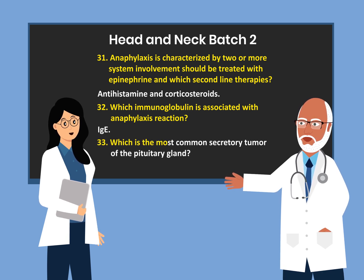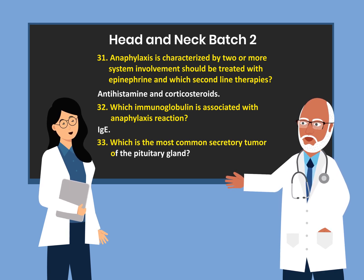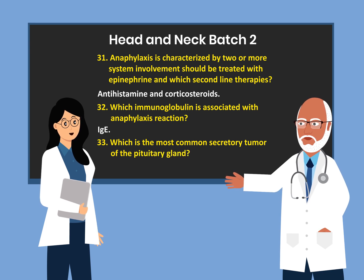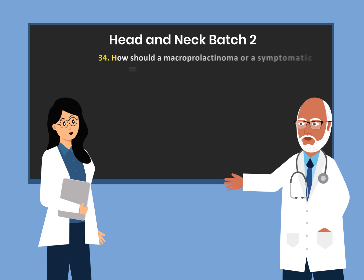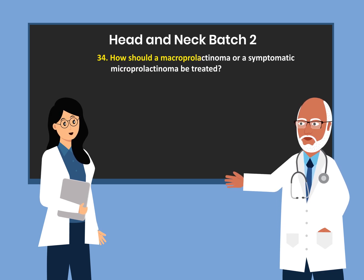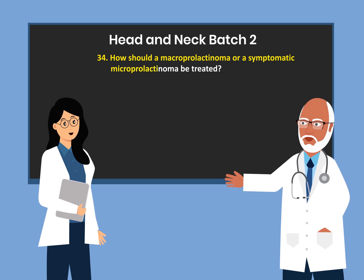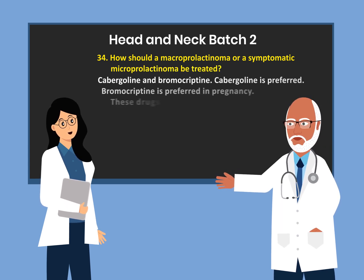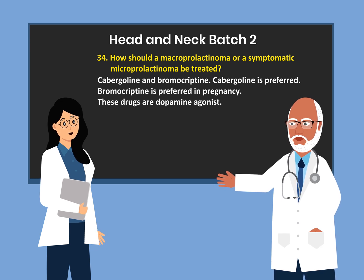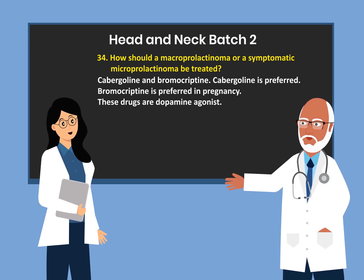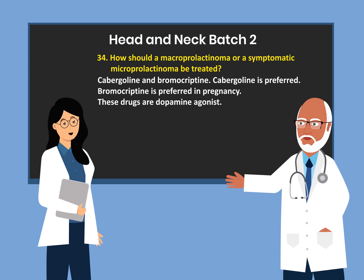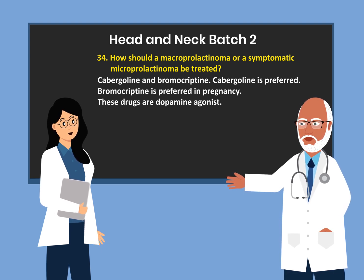Which is the most common secretory tumor of the pituitary gland? Prolactinoma. How should a macroprolactinoma or a symptomatic microprolactinoma be treated? Cabergoline and bromocriptine. Cabergoline is preferred; bromocriptine is preferred in pregnancy.